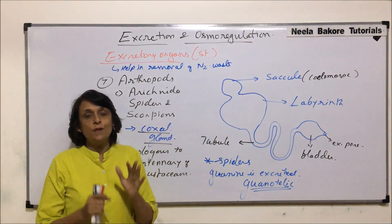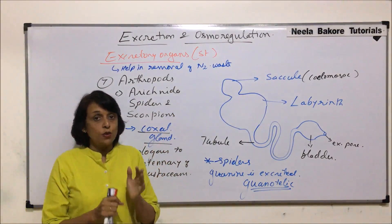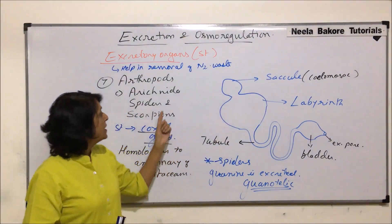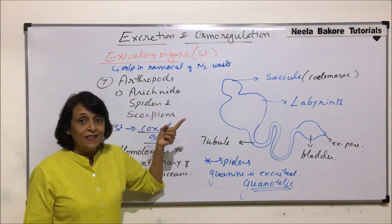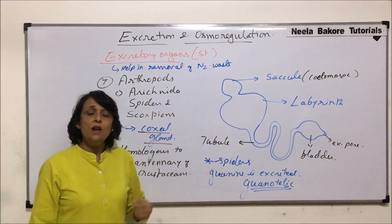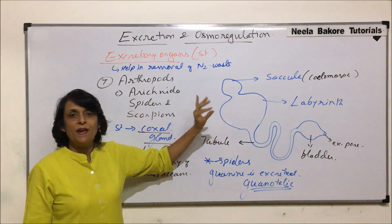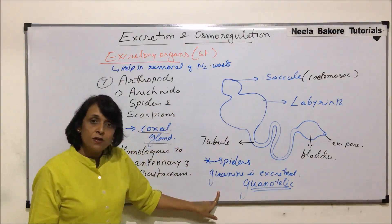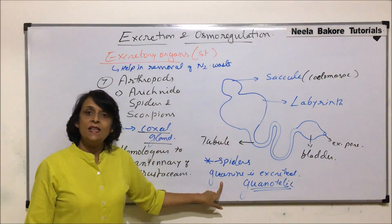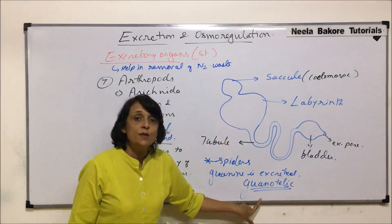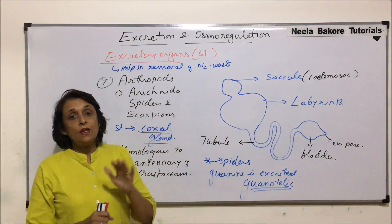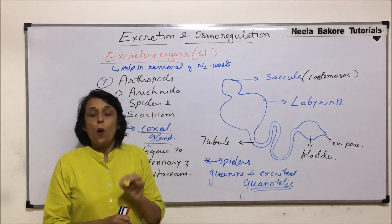In summary, for arthropods: in insects, the main excretory structures are Malpighian tubules, plus storage excretory cells — urate cells and nephrocytes. In crustaceans, we have antennal glands. In arachnids — spiders and scorpions — there are coxal glands. And a special point to remember is that some spiders eliminate nitrogenous waste as guanine, which is why they are called guanotelic.